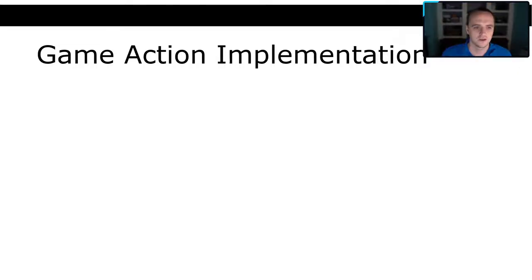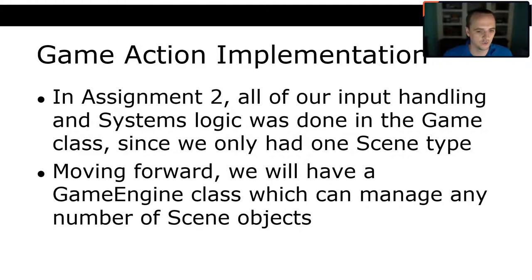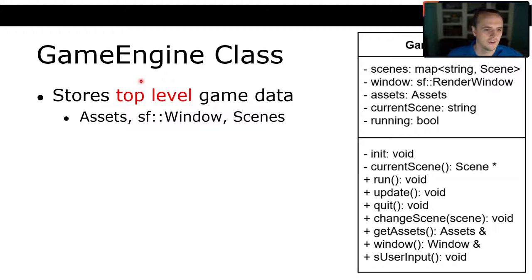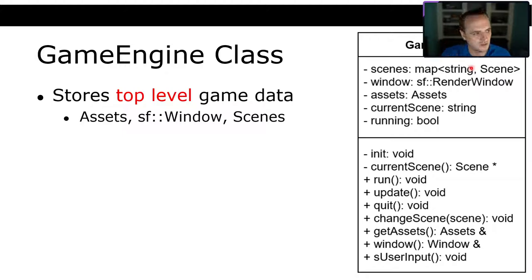In assignment 2, all input handling was done in the game class since we only had one scene type. Moving forward, we'll have a game engine class which can manage any number of scene objects. The game engine class stores top-level game data: assets, the SFML render window, and scenes as a map of strings to scenes — Mario scene, Zelda scene, menu scene, etc. It stores which scene is currently running and handles the input from the user.